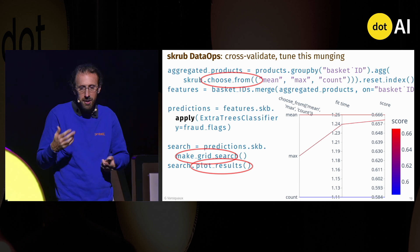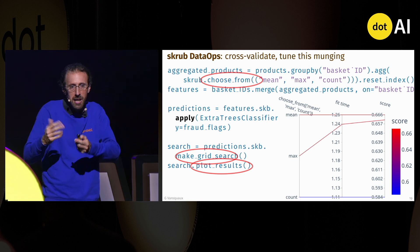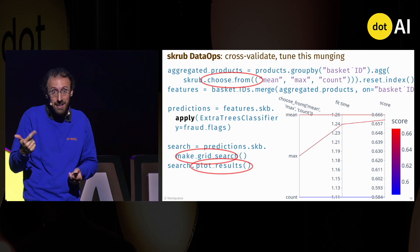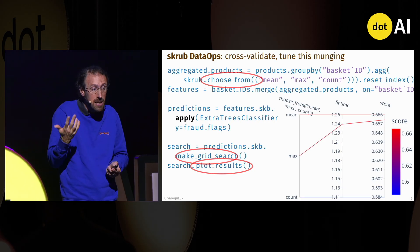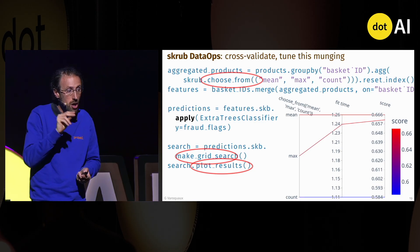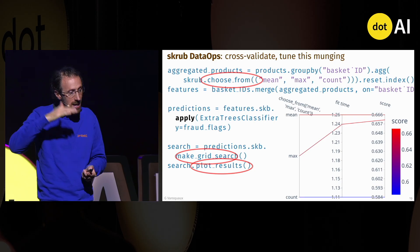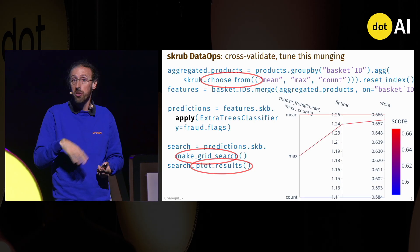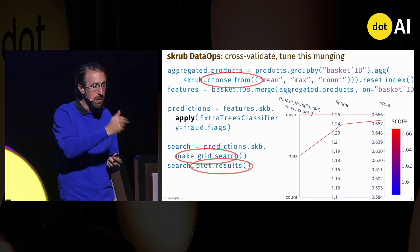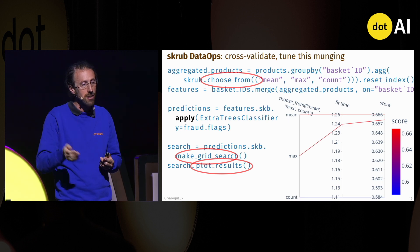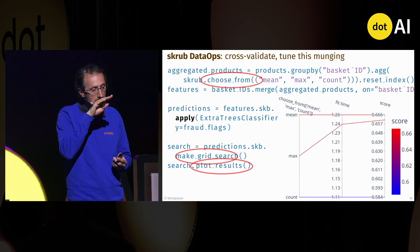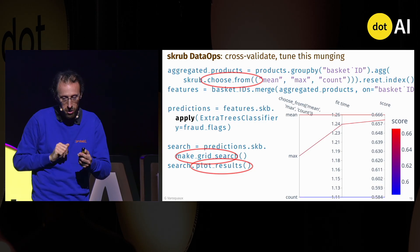I made an arbitrary choice using the mean aggregation, but I don't know what's the most relevant aggregation. Is it the count of products, the max value, or the mean value? What I can do is modify my code slightly to add .skrub.choose_from with multiple choices, then ask .skrub to make a grid search. It will run cross-validation and display predictive performance. The result shows that mean aggregation gives the best prediction performance, max is almost as good, and count doesn't work well.